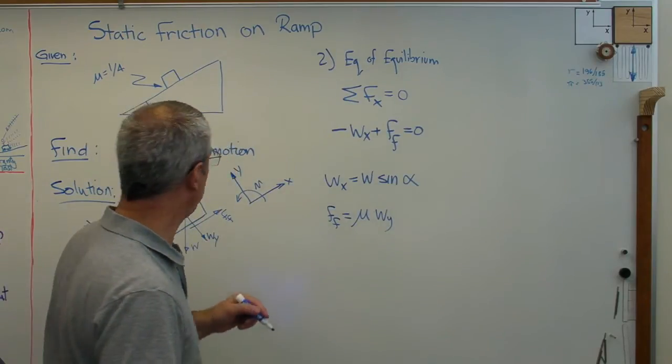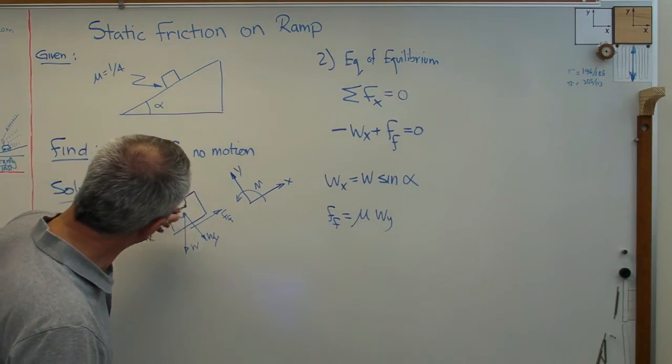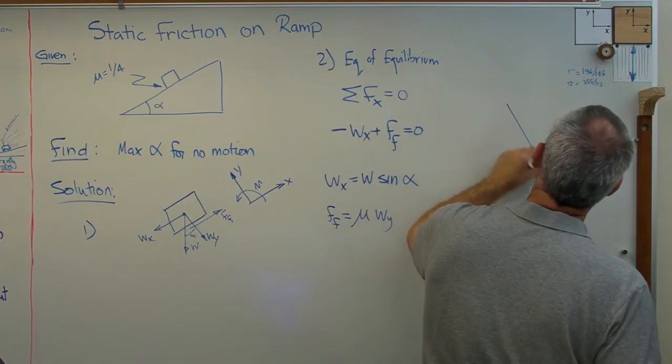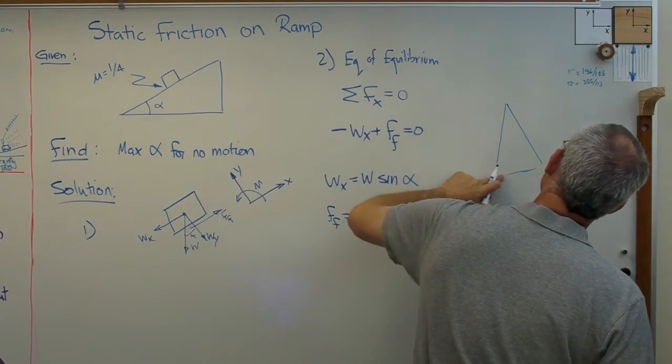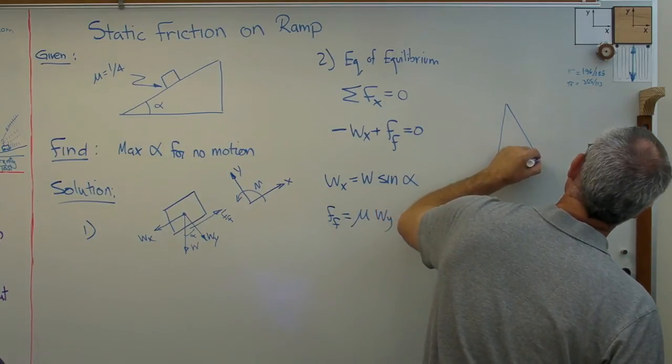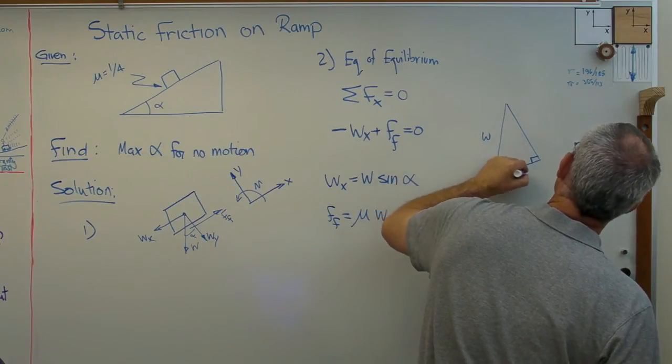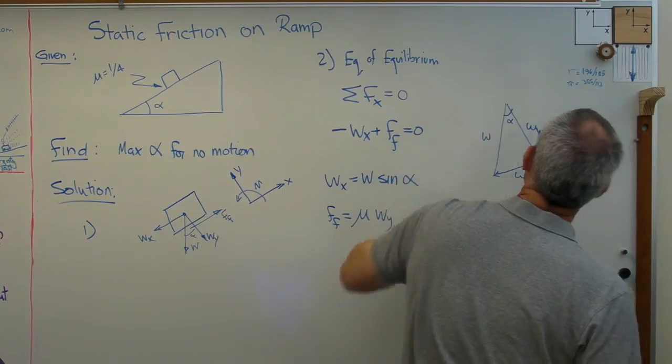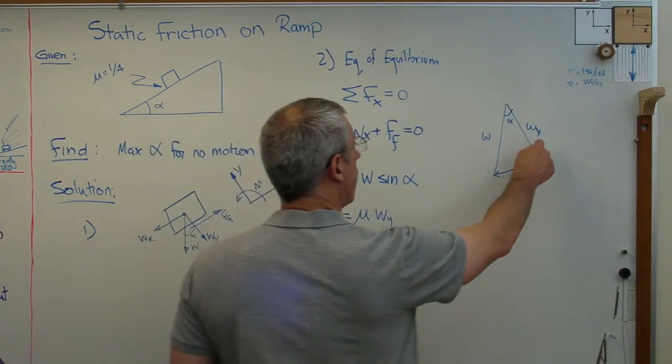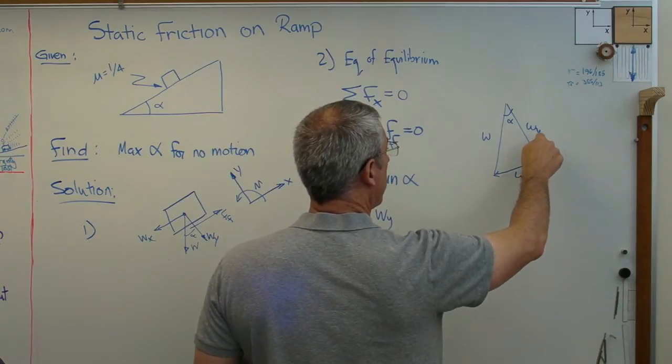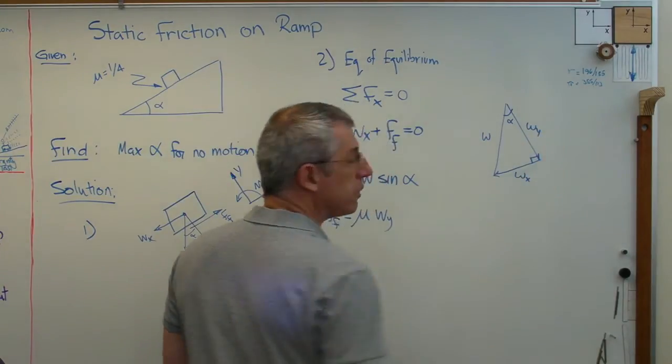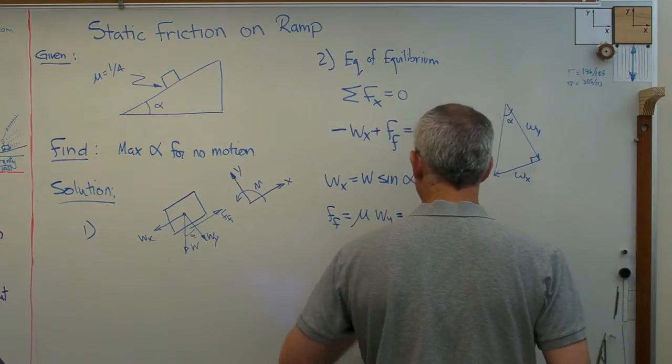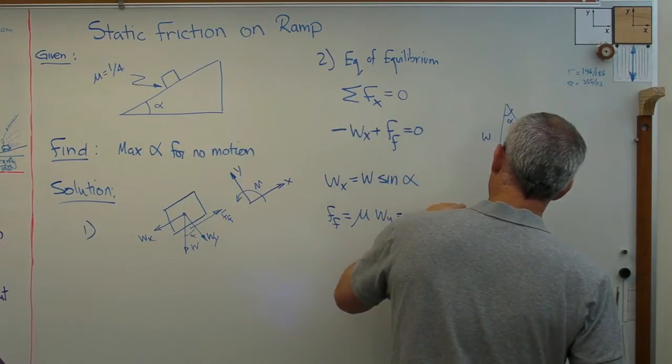And so that's going to be W_Y. Well, what's W_Y? Well, it's the component of force in that direction. That angle right there is alpha. Just in case you're wondering here, if you're going to draw my force triangle, here's what it looks like. That's W, W_X, W_Y. Okay. With that being alpha. So that's where this is coming from. So W_Y over W equals cosine alpha.